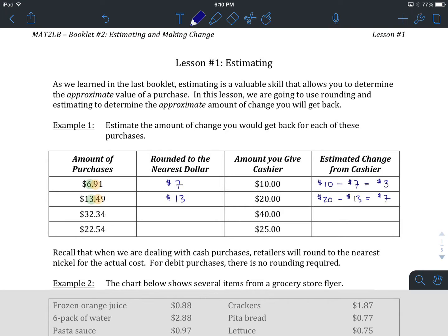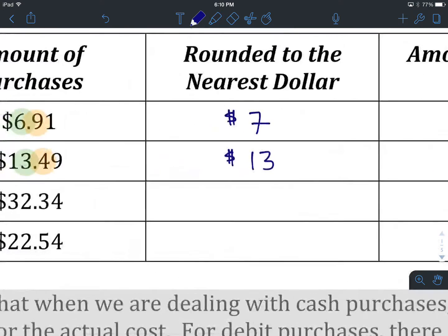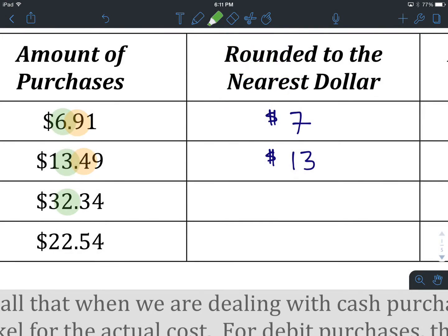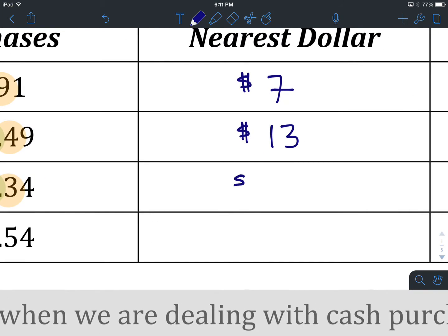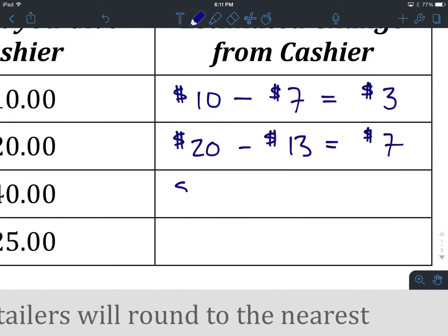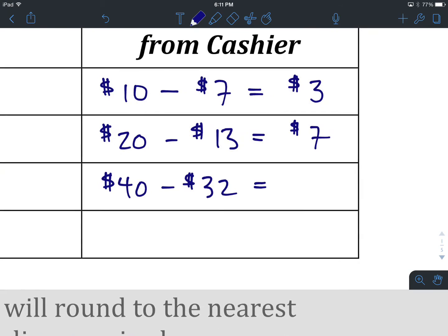Okay, you've come back. $32.34. We're going to round that to the nearest dollar. Dollars, the two. We look to the digit after to see how we round. We are going to round down or keep the same, which means we are going to estimate our cost at $32. We give our cashier $40. The difference between $40 and $32 is going to be $8.